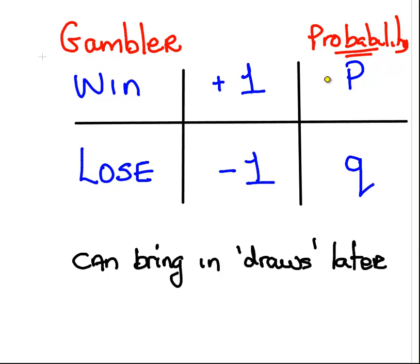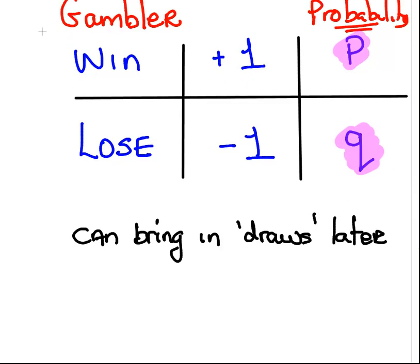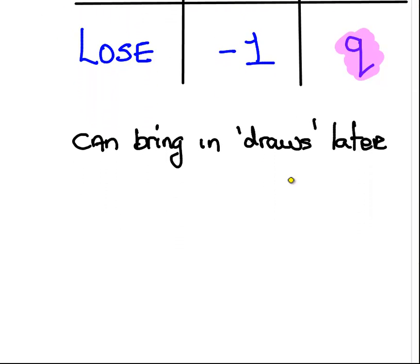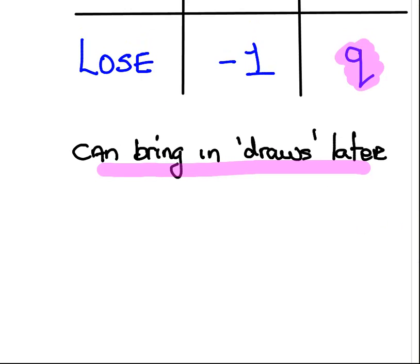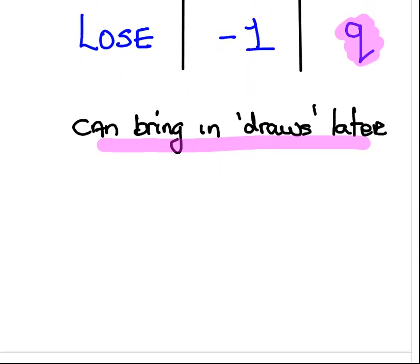The probability of a win is P, and the probability of a loss is Q. This is important actually. I'm also going to bring in this idea of a draw later on, where you can have a tied outcome where nobody wins. But for now, I'm going to work on the basis of win or lose.